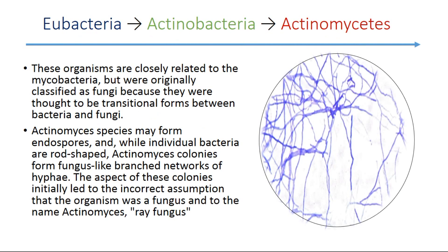The next slide is actinomycetes. These organisms are closely related to mycobacteria, but were originally classified as fungi because they were thought to be transitional forms between bacteria and fungi. Actinomycetes species may form spores, and while individual bacteria are rod-shaped, actinomycetes colonies form fungus-like branched networks of hyphae. The aspects of these colonies initially led to the incorrect assumption that the organism was a fungus, and to the name actinomycetes meaning ray fungus.